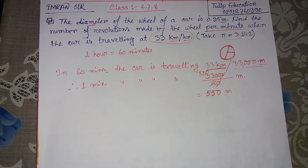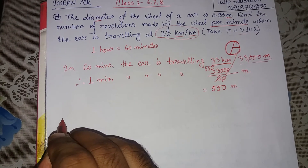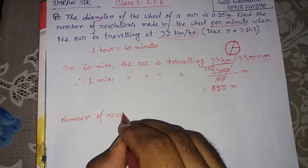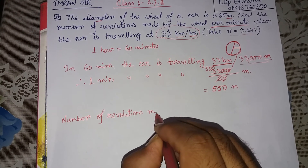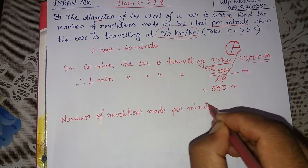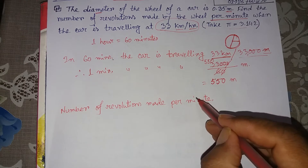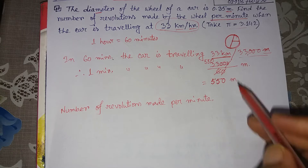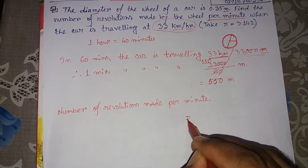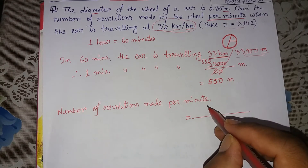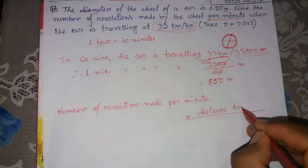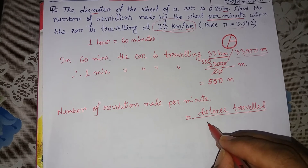Now I have the distance per minute. I will find the number of revolutions per minute. The formula for the number of revolutions made per minute is: total distance traveled divided by the circumference of the wheel.